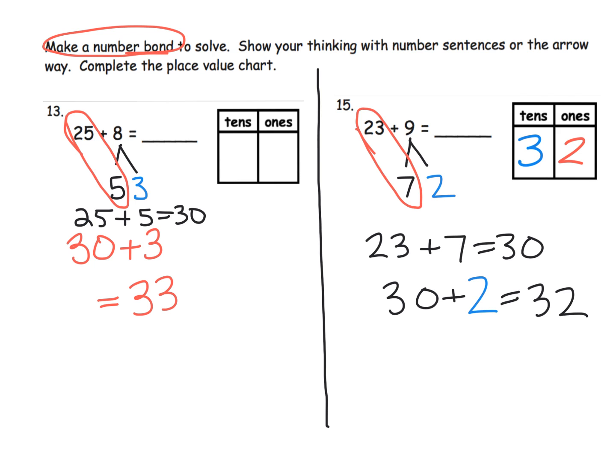Going back here, how many tens did we end up with? We ended up with three tens. How many ones? Three ones. So our answer is 33.